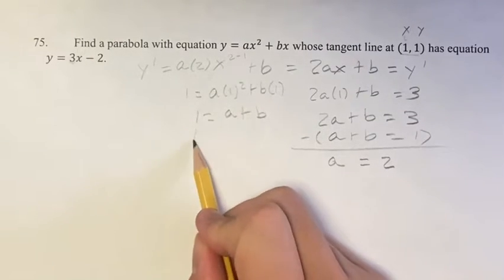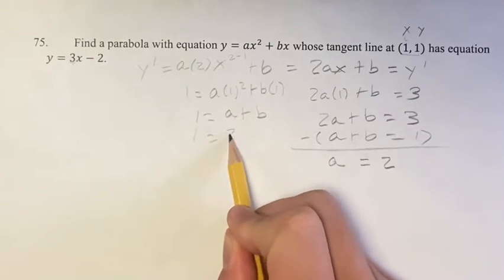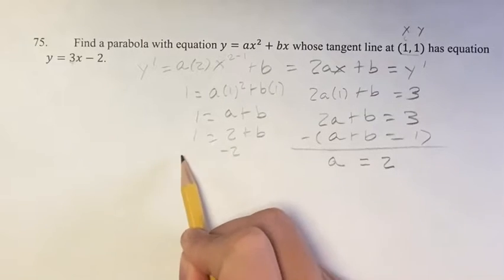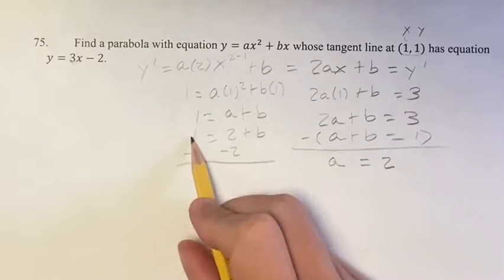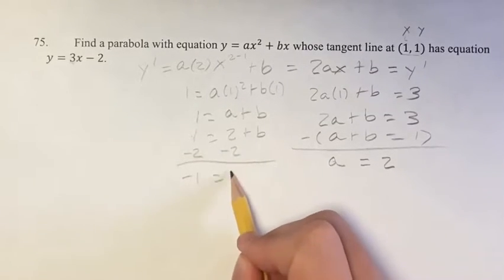a is equal to 2. Therefore, 1 is equal to a plus b is equal to 2 plus b. Subtracting by 2 on both sides, we get negative 1 is equal to b.